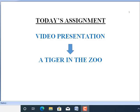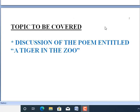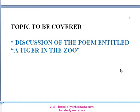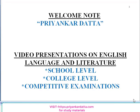At the very outset of this video presentation I want to announce that today's assignment is on a poem. The name of the poem is 'A Tiger in the Zoo' and the name of the poet is Leslie Norris. The topic to be covered is a detailed discussion of this poem. Welcome to my educational channel, Priyankar Datta, where you will find video presentations on English language and literature for school level, college level, and competitive examinations.